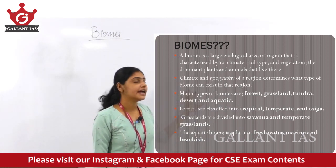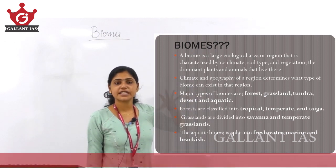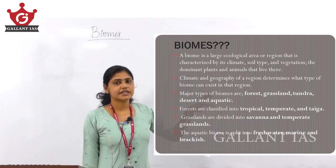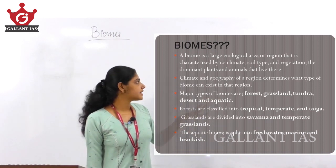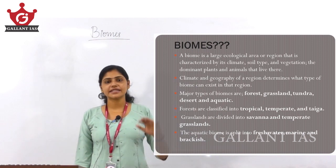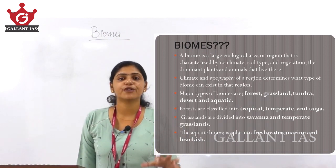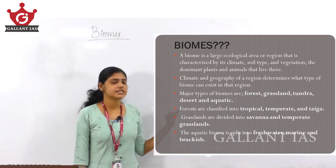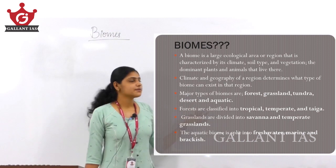The climate and geography of a region determines what type of biome can exist in that particular area. A large ecological area or region can consist of different ecosystems, which is why we say a biome is a collection of ecosystems. Climate and geography are the two important dominant factors which determine the type of biome present in a particular area or region.